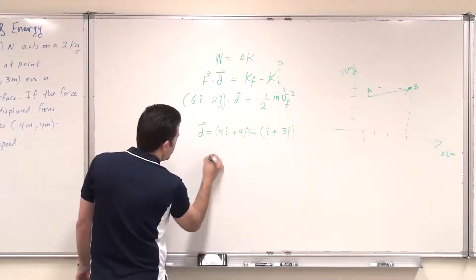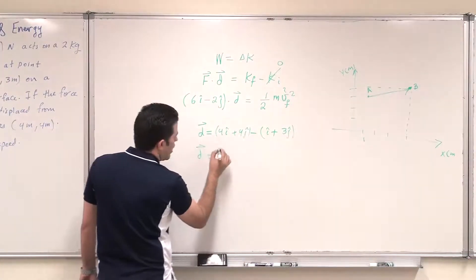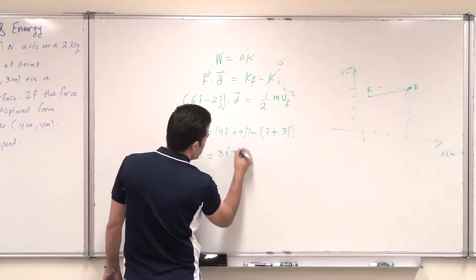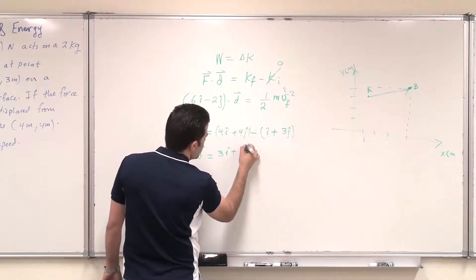This will give D as 3i hat, and 4 minus 3 is 1j hat.